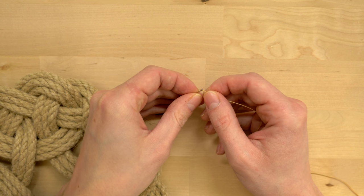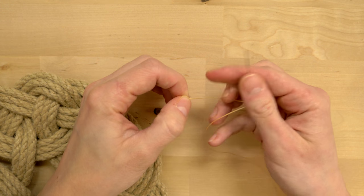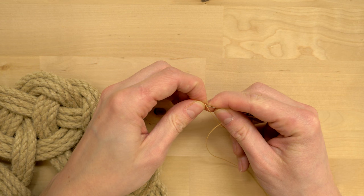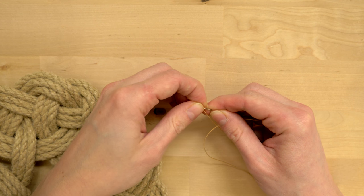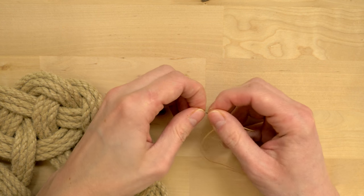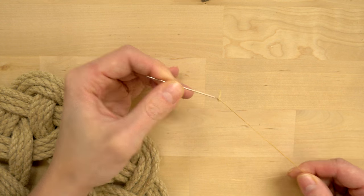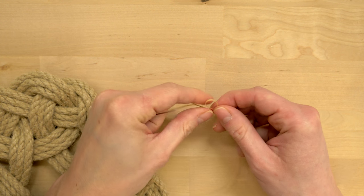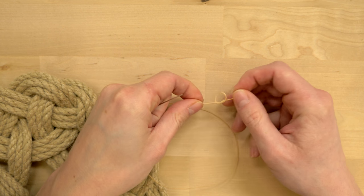Now I'm going to thread my needle. Since this is polyester thread, I can simply pierce it in order to thread my needle. On the other side of my thread I'm going to tie a simple overhand knot just to prevent my thread from slipping out while I'm stitching.